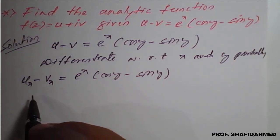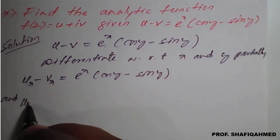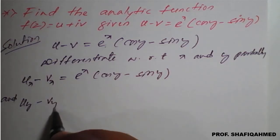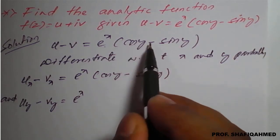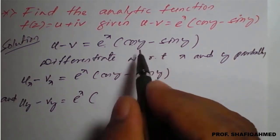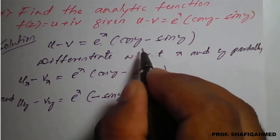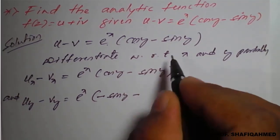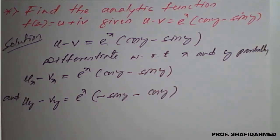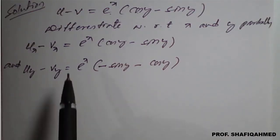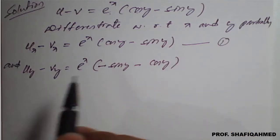Again we differentiate with respect to y partially. That gives u_y minus v_y on the left. On the right, e raised to x is constant, kept as it is. The partial derivative of cos y with respect to y is minus sin y, and minus partial derivative of sin y with respect to y is minus cos y. So equation 2 is: u_y minus v_y = e raised to x into minus sin y minus cos y.